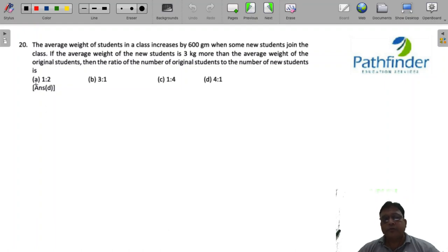CAT 22 slot number 1, quantitative aptitude question number 20. The average weight of students in a class increases by 600 grams when some new students join the class. If the average weight of new students is 3 kg more than the average weight of original students, and the ratio of original students to the number of new students is...